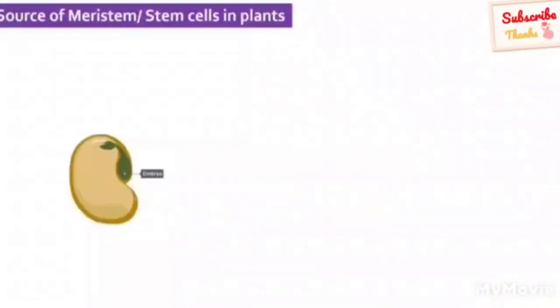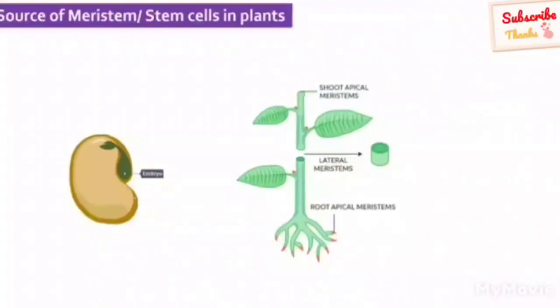In plants, embryo, shoot tip, root tip and nodes are the major reservoir of these type of stem cells. But other meristems to some extent are differentiated. For example, a shoot apical meristem will form only shoot but not root. Likewise, root apical meristem can form root but not leaf, flower or any such organs.